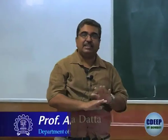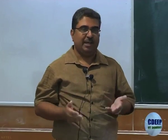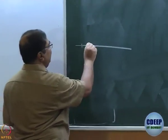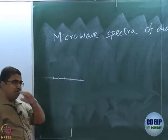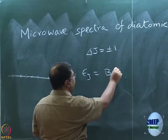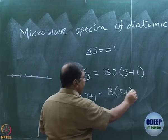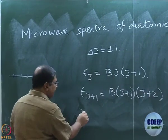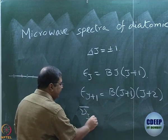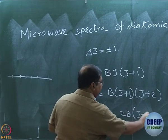We have discussed the background required to understand what microwave spectra look like and why. One thing we have said already is that the separation has to be equal, because the selection rule is ΔJ = ±1. The energy εJ = BJ(J+1), so εJ+1 = B(J+1)(J+2). The wave number for transition J to J+1 turns out to be ν̄ = 2B(J+1).